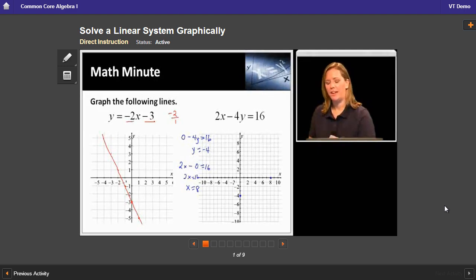So x equals positive 8. That's a point on the x-axis there. Now I have 2 points. We know it only takes 2 points to construct a line, so I'm just going to connect the dots here and make a nice straight line.